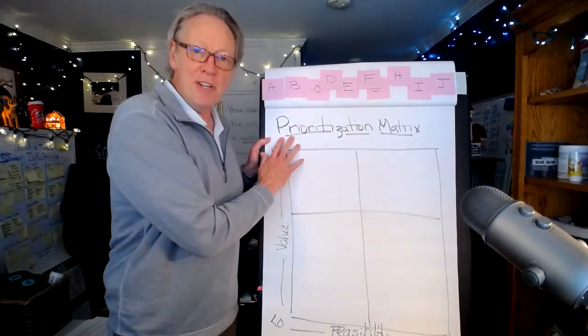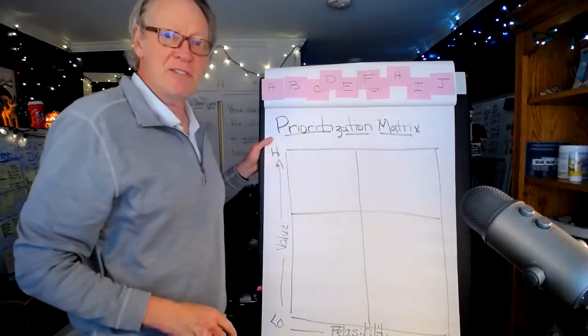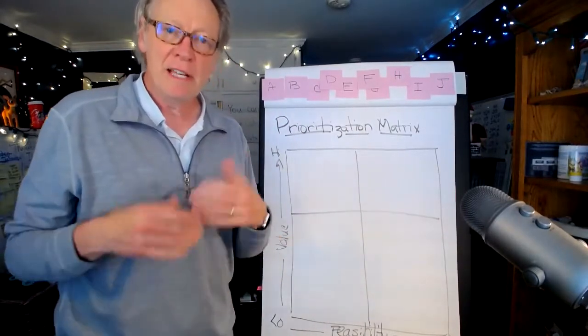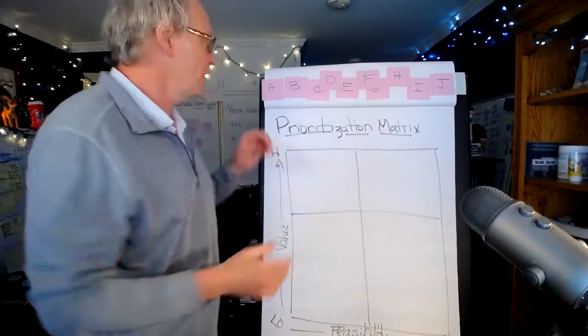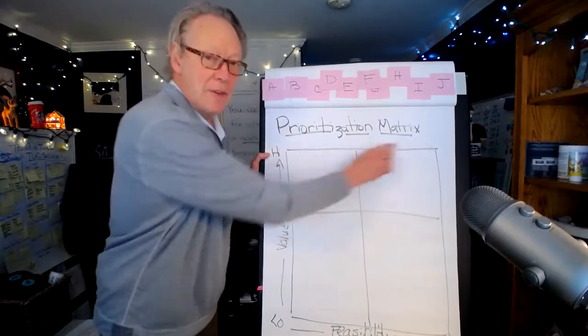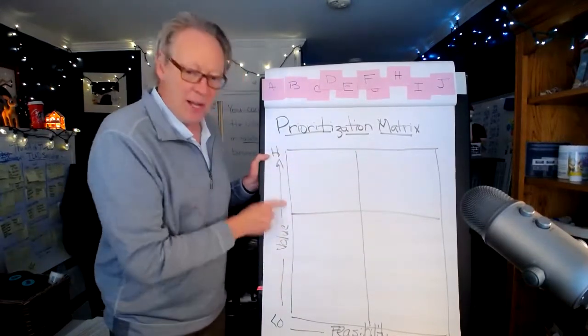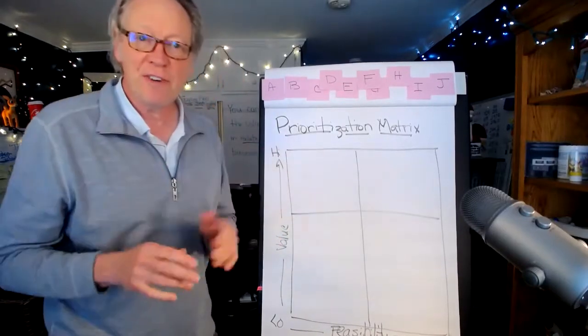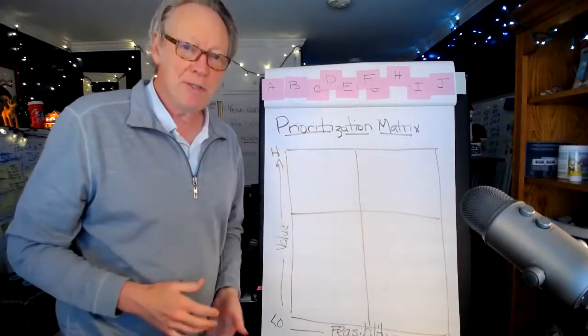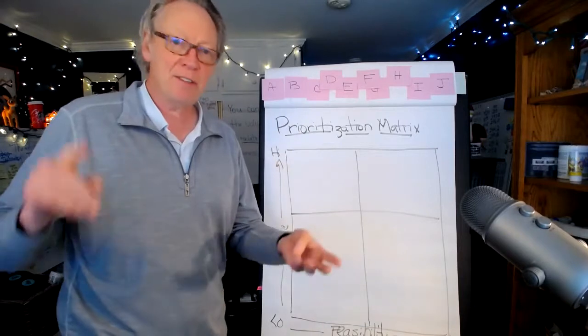That's the prioritization matrix. In this example here, I've listed each of the use cases as a separate letter. Based on your interview process and discussion process, you're going to bring the users together and place each one of these use cases on this prioritization matrix based on two key variables: the value. And we know value is not just financial value—there's all kinds of other KPIs and metrics against which we use to measure value.